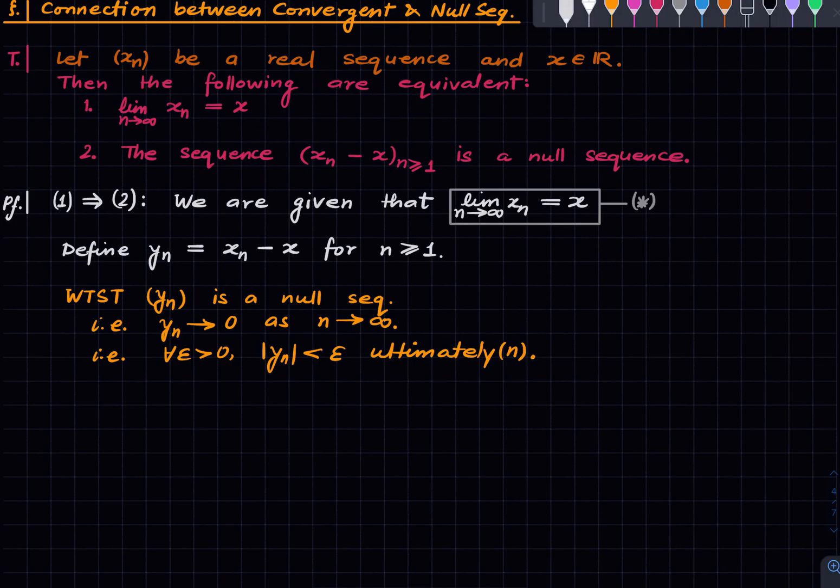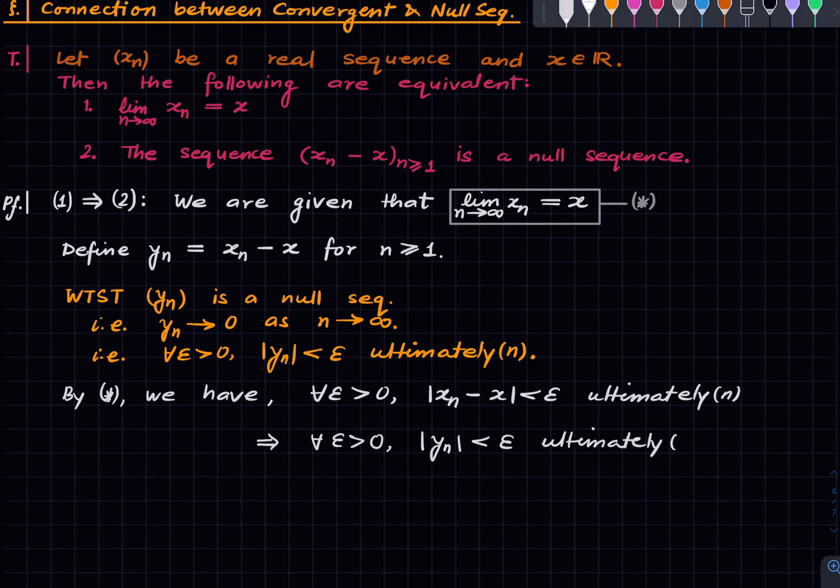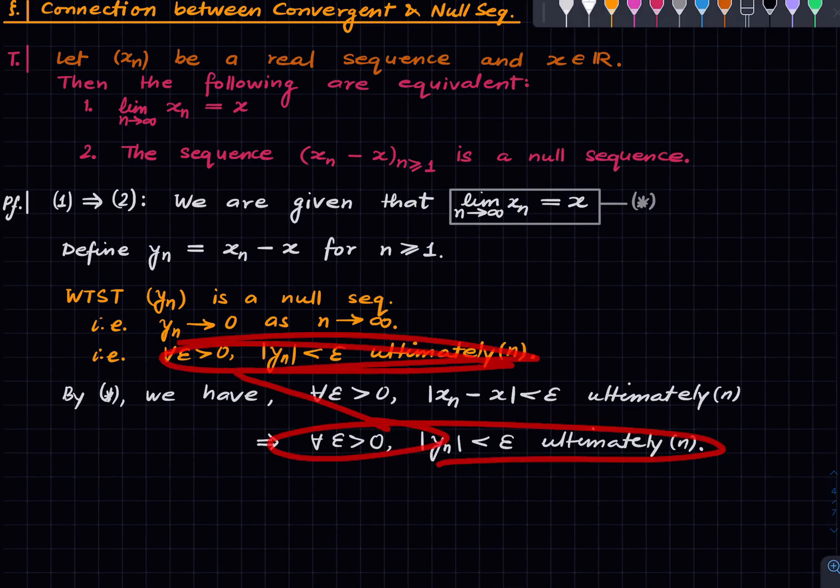But now by star, we have for all epsilon greater than zero, the absolute value of xn minus x is less than epsilon ultimately. This is exactly what star is, this is the meaning of star. But what does this mean? Just a change of notation tells us that the absolute value of yn is less than epsilon ultimately. And this is what we wanted. This is what we wanted to establish, and we are done.